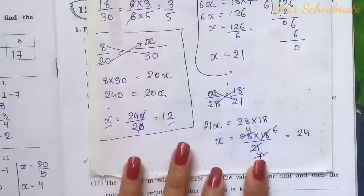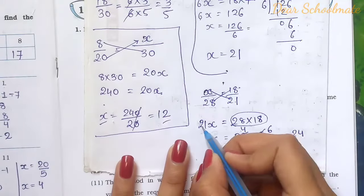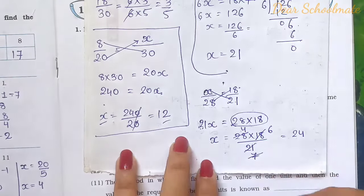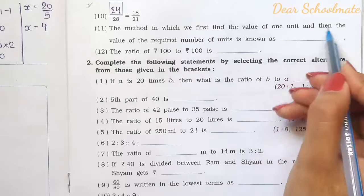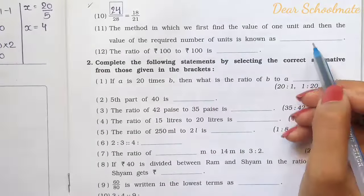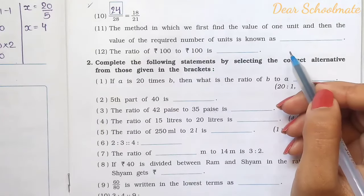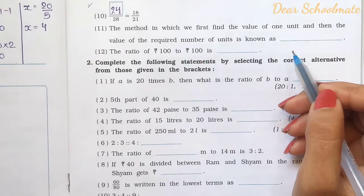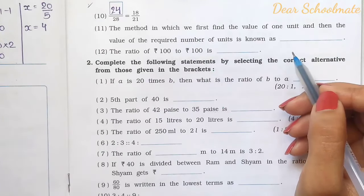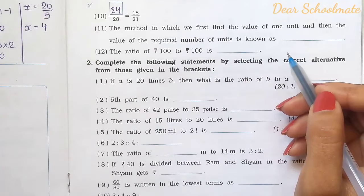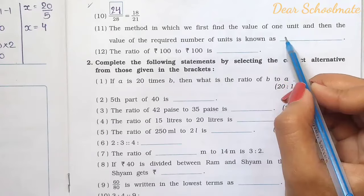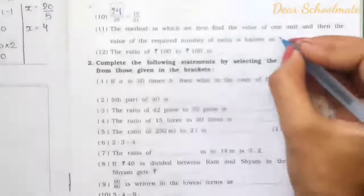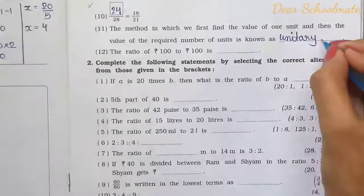If cross multiplication seems complex, multiply the two numbers and divide by 21 to get the answer. Number 11: The method in which we first find the value of one unit and then the value of the required number of units is known as the unitary method. For example, if 5 pens cost 20 rupees, we first find the cost of one pen, then calculate the cost of 6 pens. This method is called the unitary method.